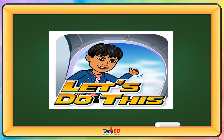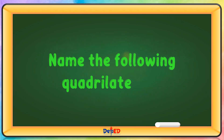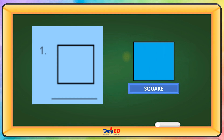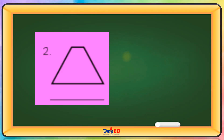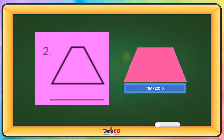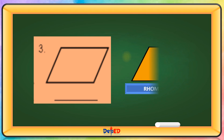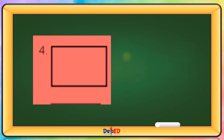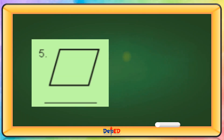Let's do this! Name the following quadrilaterals. The first picture is a square. The second picture is a trapezoid. The third picture is a rhombus. The fourth picture is a rectangle. The fifth picture is a parallelogram.